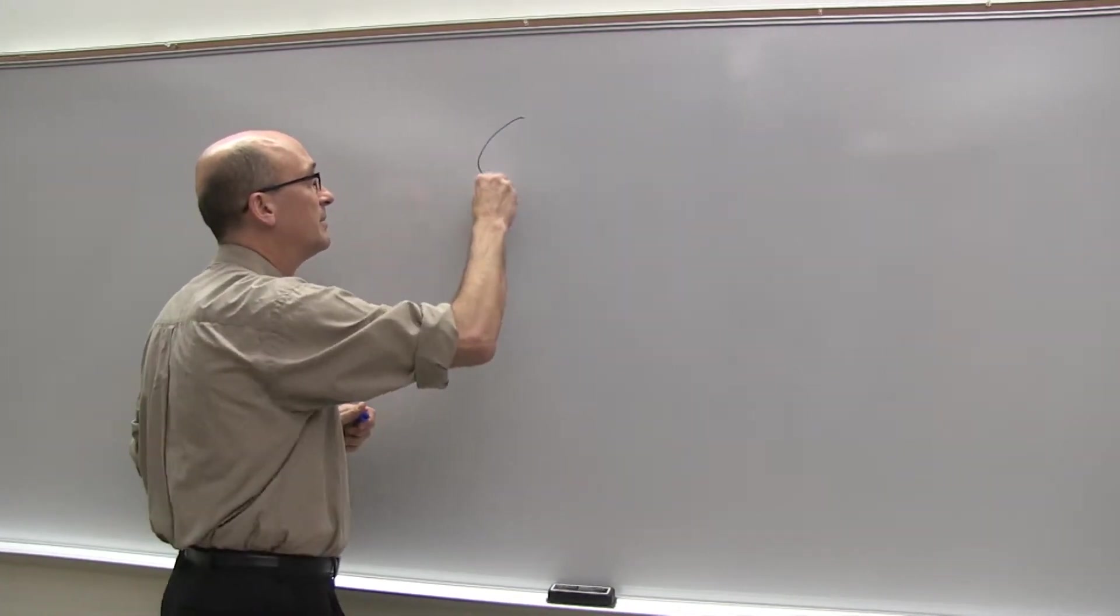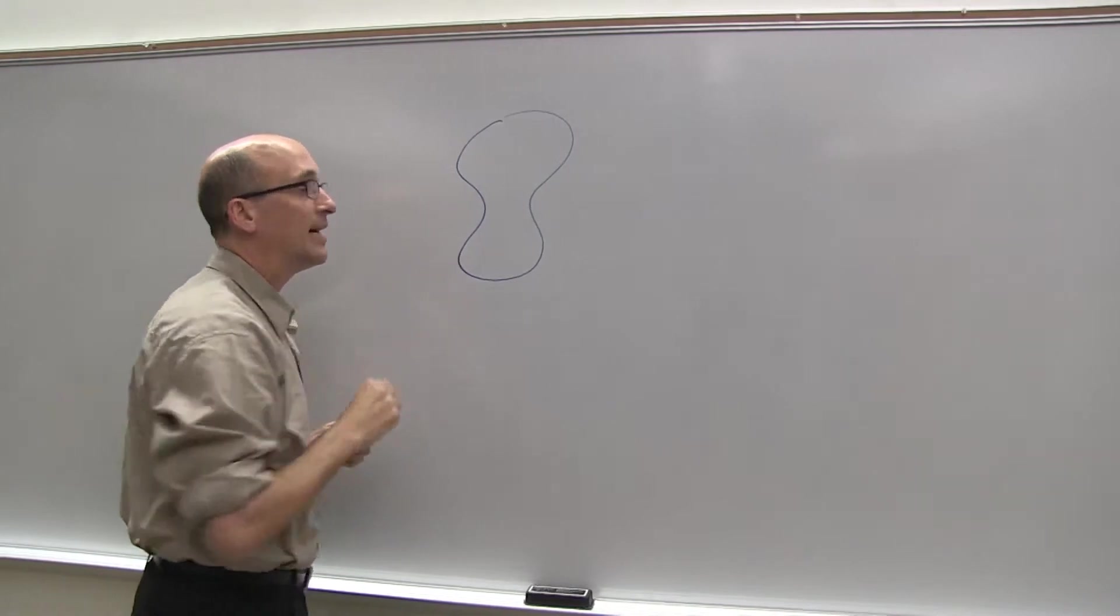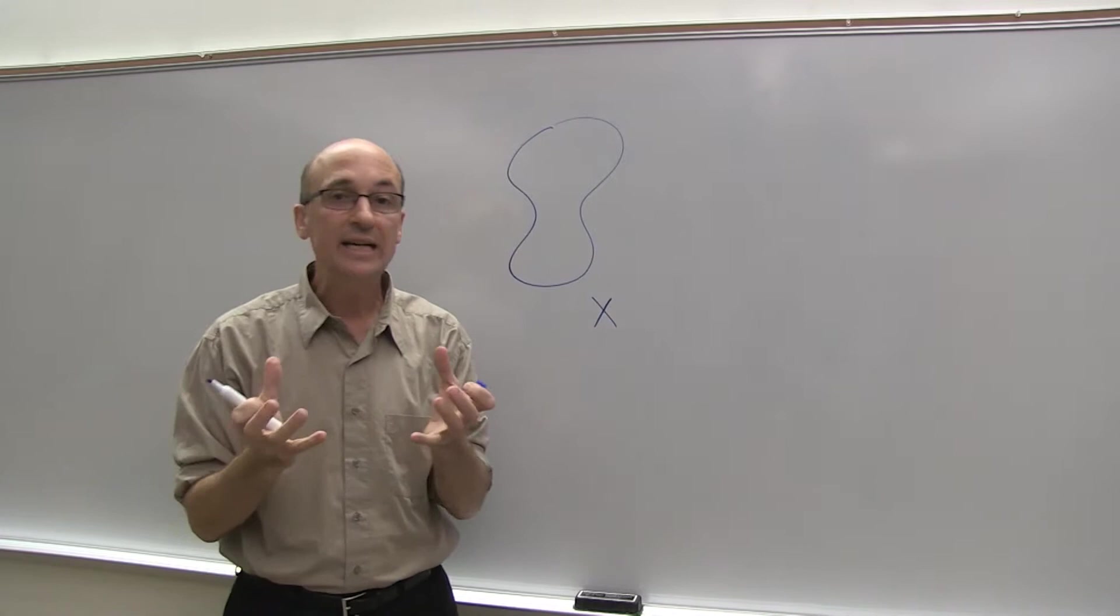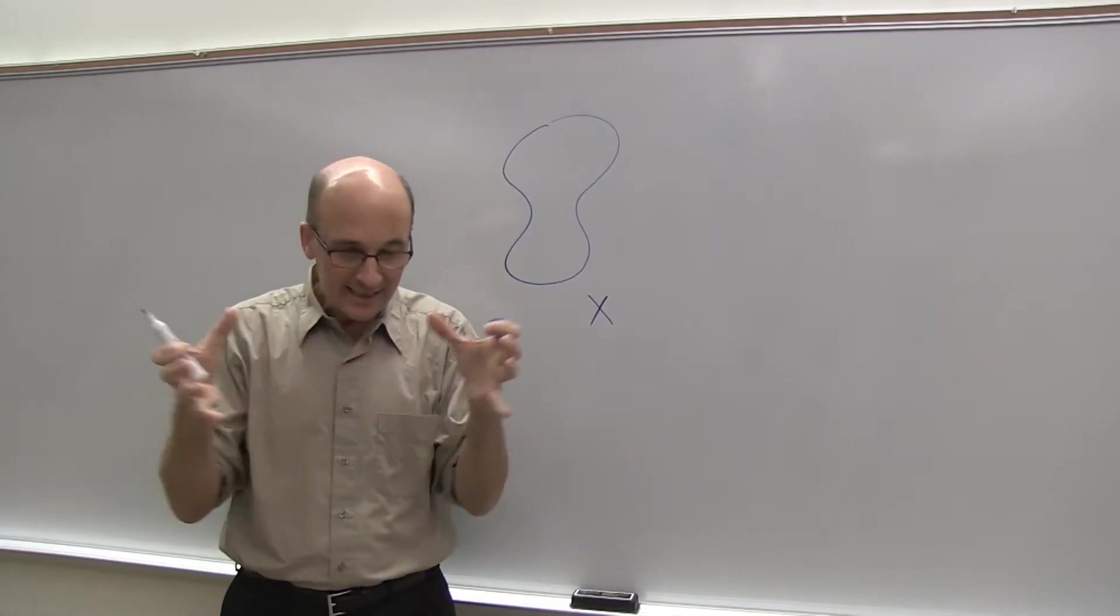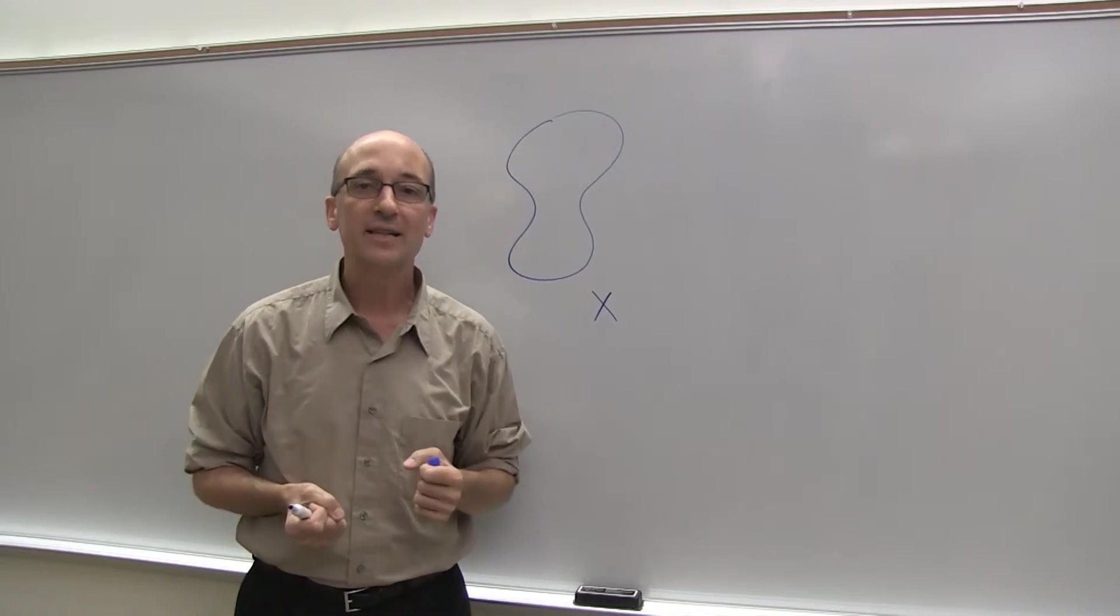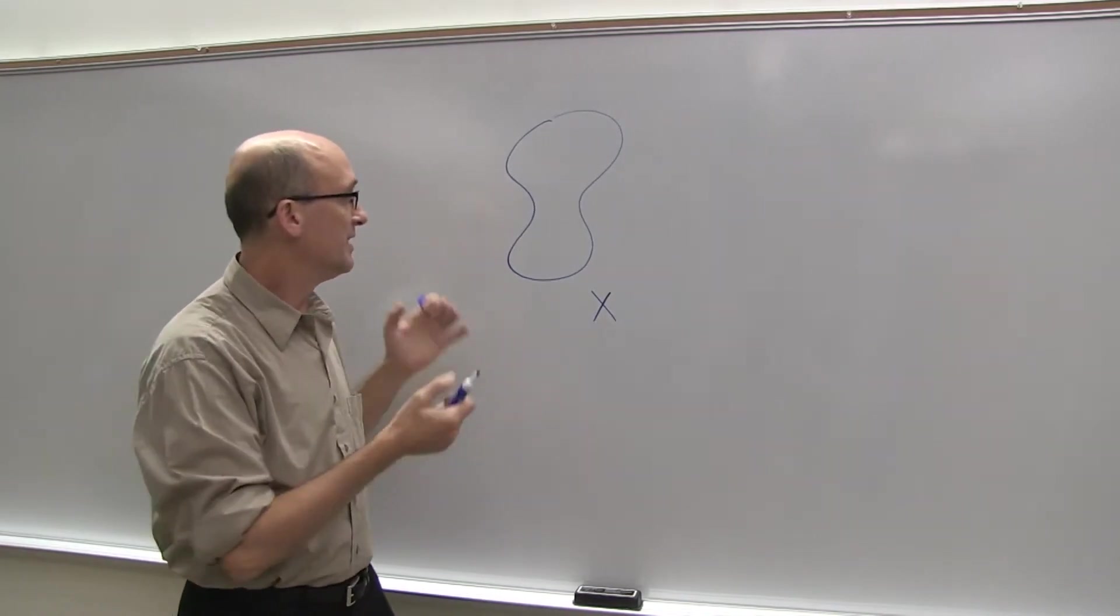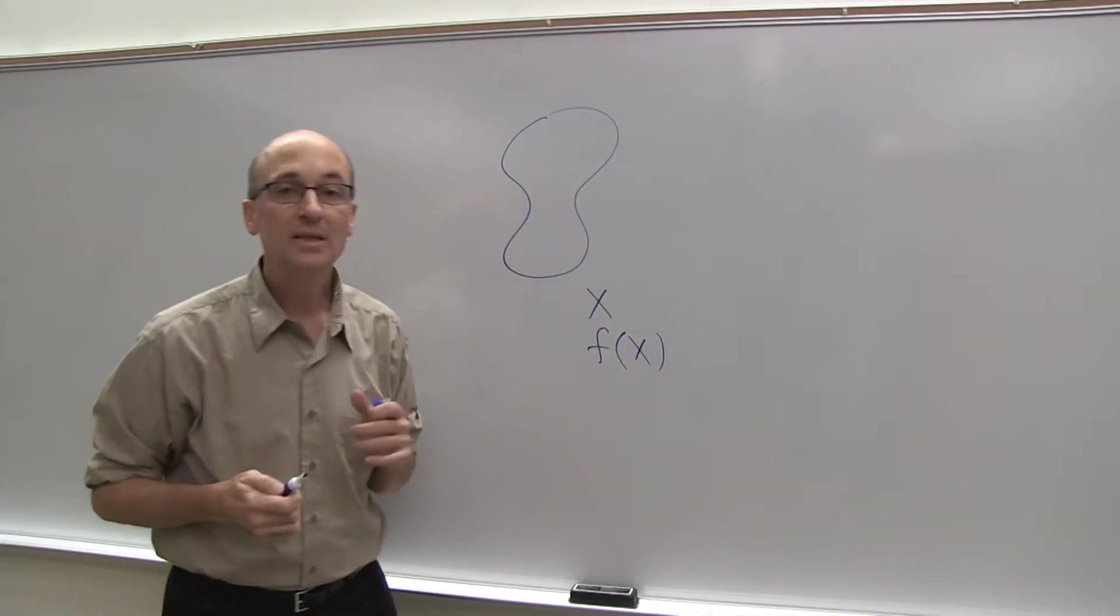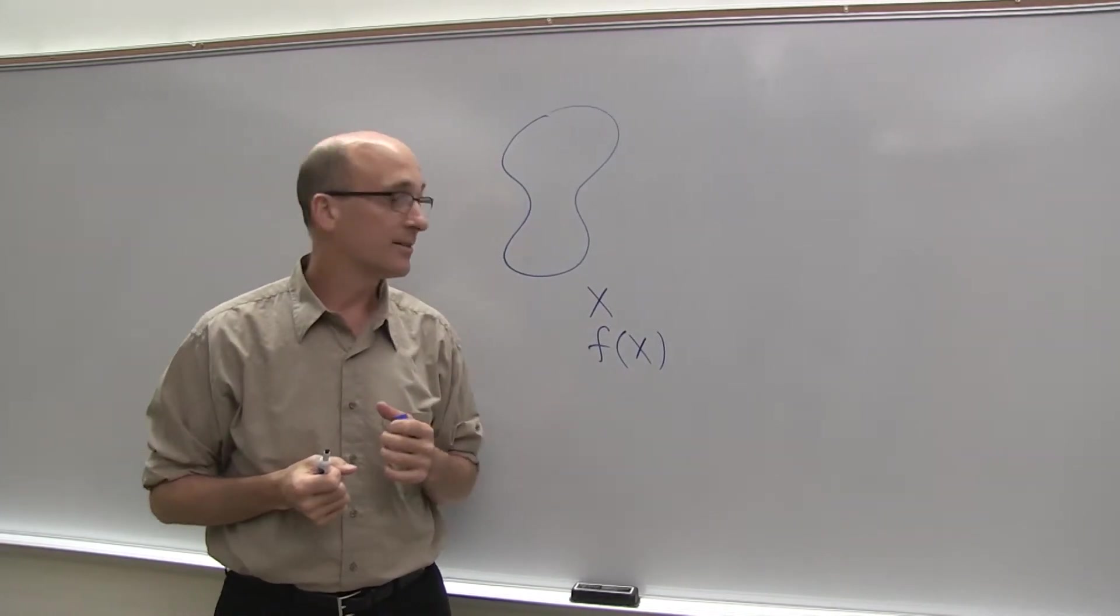We have a problem to understand some object. I will call it X. I've drawn it as a squishy blob to indicate what's hard about it. It's difficult to get your hands on. It resists direct analysis. So what we want to know is some property. We want to measure something about X. I'll call it f of X.